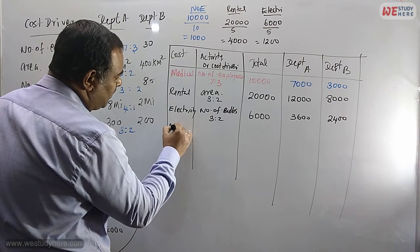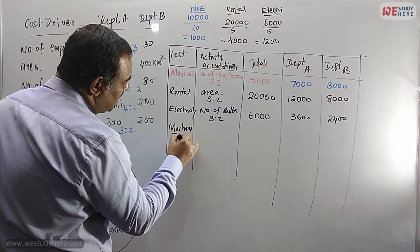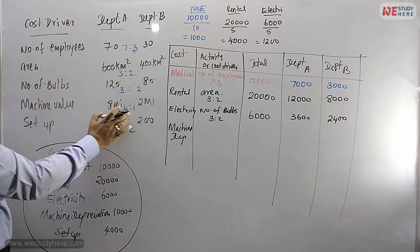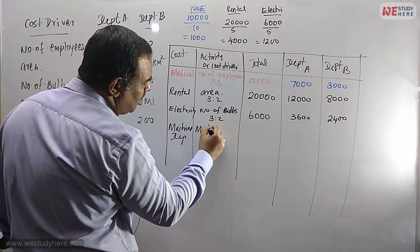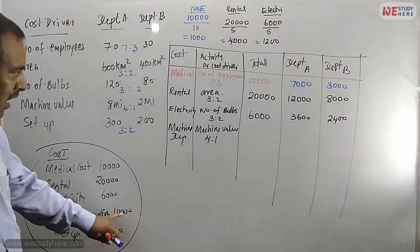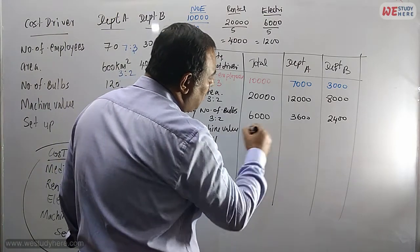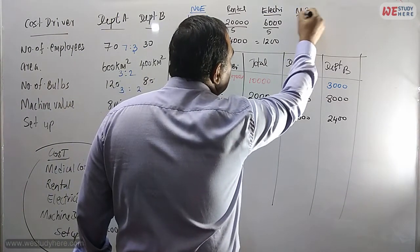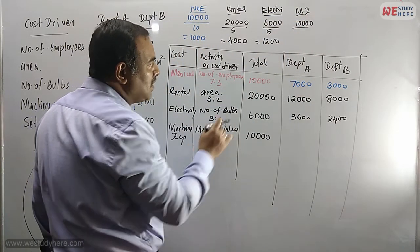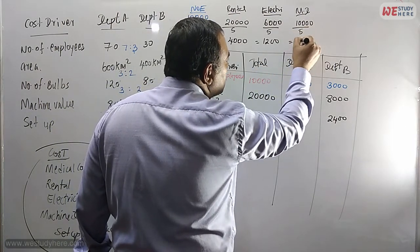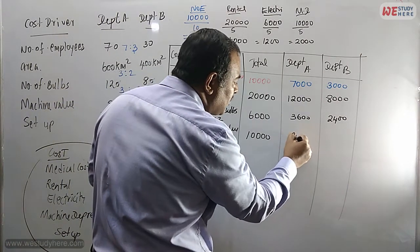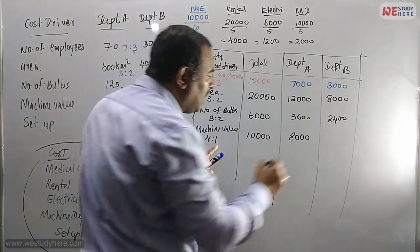Next is machine depreciation. The cost driver is machine value, with ratio 4 is to 1. Machine depreciation total is 10,000. Divide 10,000 by 5 (since 4 + 1 = 5): that gives 2,000 per portion. Department A: 4 × 2,000 = 8,000. Department B: 1 × 2,000 = 2,000.